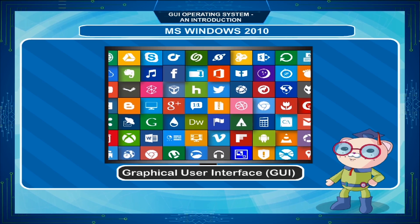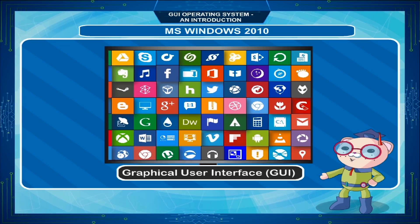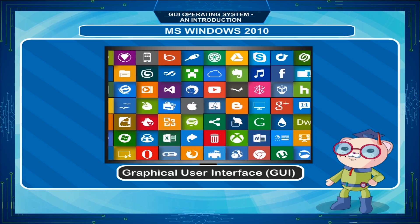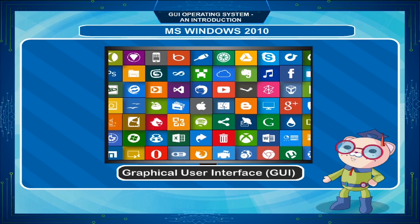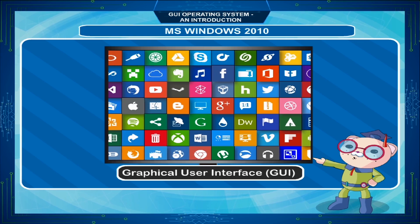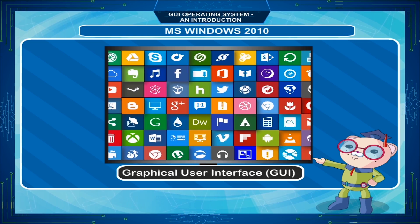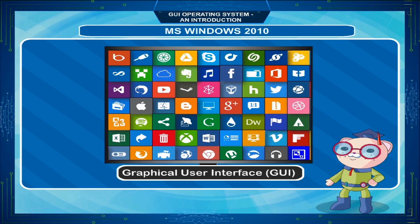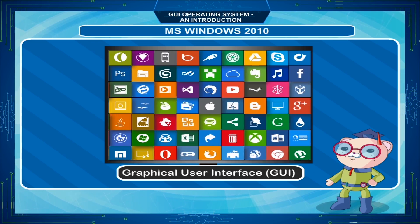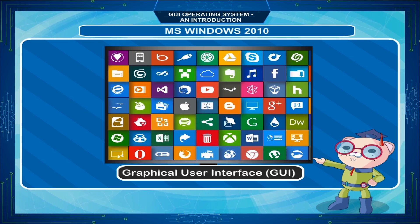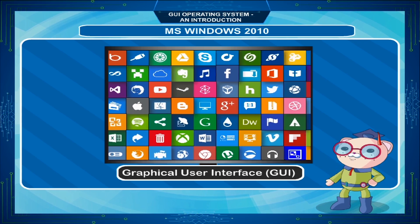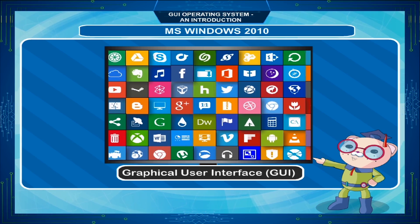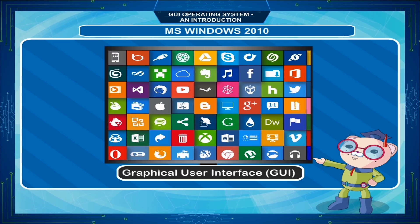Windows is an operating system which enables the user to interact with the computer, providing more ways to interact than typing. It is a set of programs that provides a user-friendly platform or GUI and helps to operate a computer. A graphical user interface or GUI offers graphical icons and visual indicators, and actions are usually performed through direct manipulation of the graphical elements.